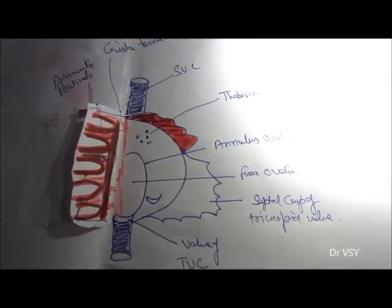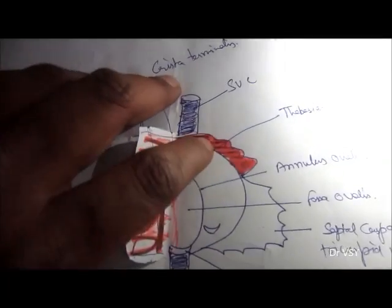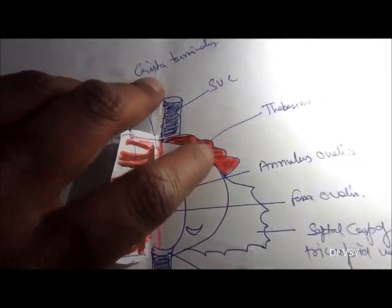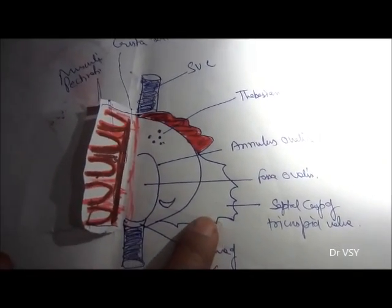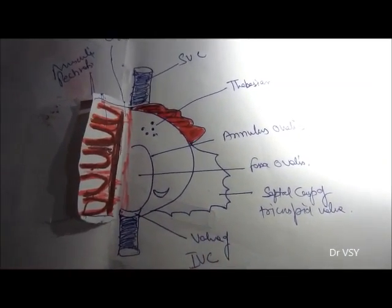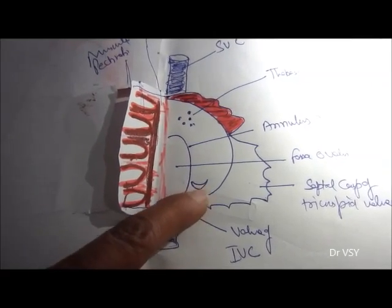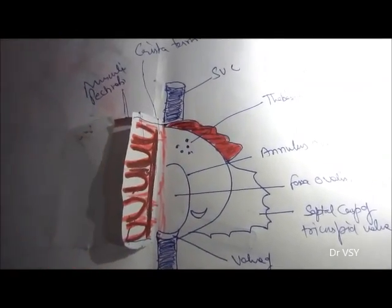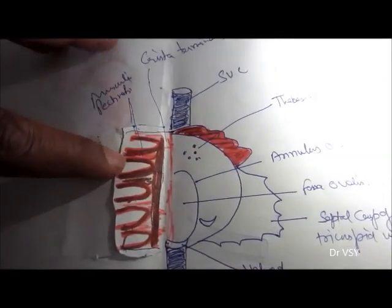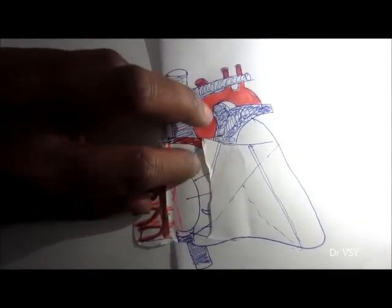The margins around the fossa ovalis depression are known as the annulus ovalis. The auricle is covering the arch of the aorta, and this is the septal cusp of the tricuspid valve. The coronary sinus is also visible here — this is how the inner part looks.